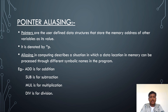Aliasing is described in computing as a situation in which a data location in memory can be accessed through different symbolic names in a program. Examples: add for addition, sub for subtraction, mul for multiplication, and div for division.